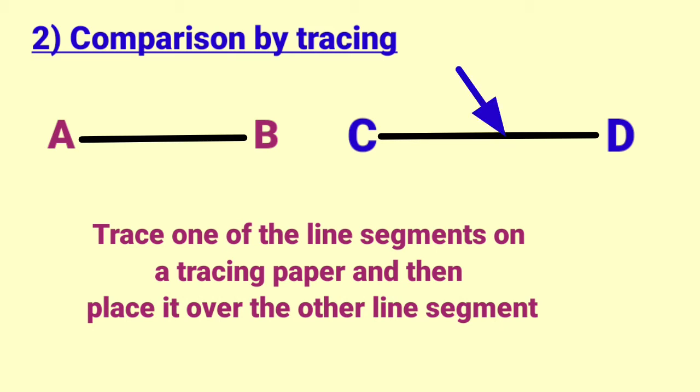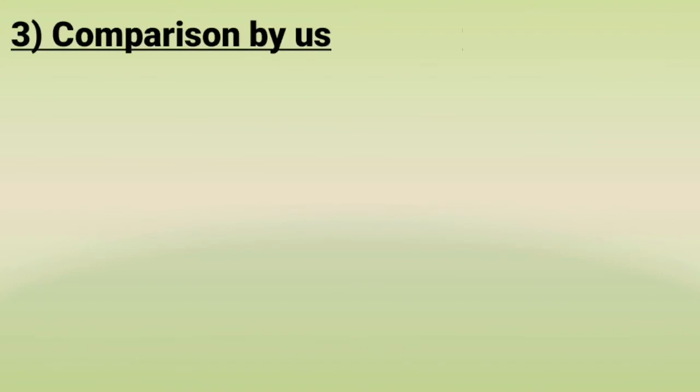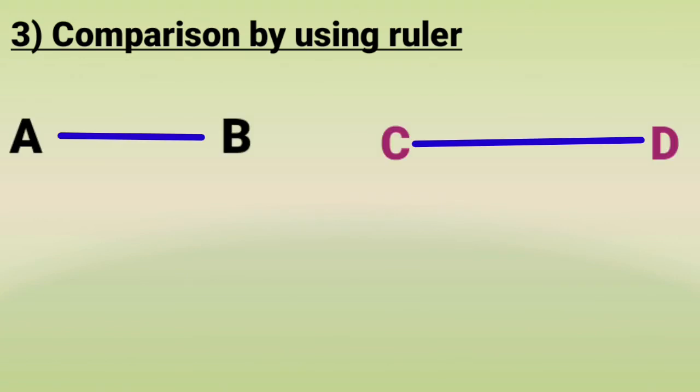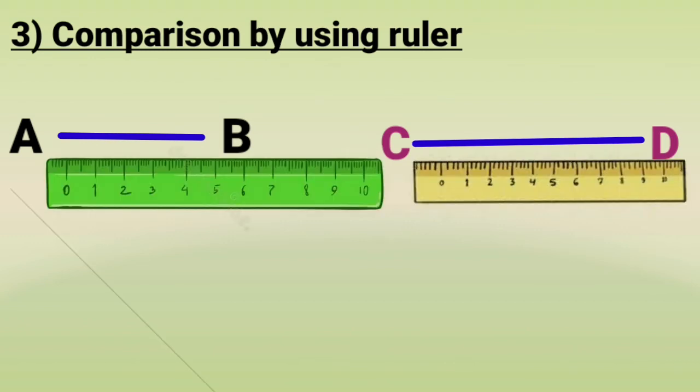But here also we will not get accurate results. So, the third method of comparison is comparison by using a ruler. Again, two line segments are there, AB and CD. It is easy to find out with the help of a ruler which one is longer and which one is shorter.